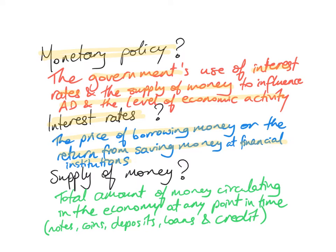The supply of money is the total amount of money circulating in the economy at any one point in time. It includes notes and coins, but also bank deposits, all loans, outstanding loans, and credit. So it's not just the notes and coins — it refers to deposits, loans, and credit. These definitions will help you follow the rest of the video.